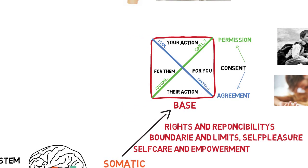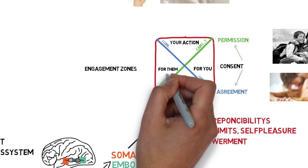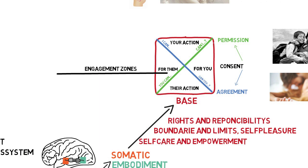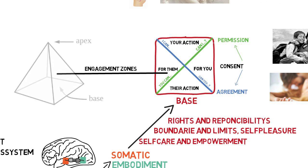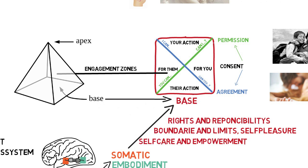In Somatic Consent, we call these dynamics the engagement zones. It is a map for personal and spiritual development, inspired by the Wheel of Consent developed by Betty Martin. These dynamics are transformed into a multidimensional map in a pyramid structure. Beginning at the base, where we integrate shadow dynamics and survival strategies, moving into self-care and several levels of empowerment, we embody through practicing the engagement zones.